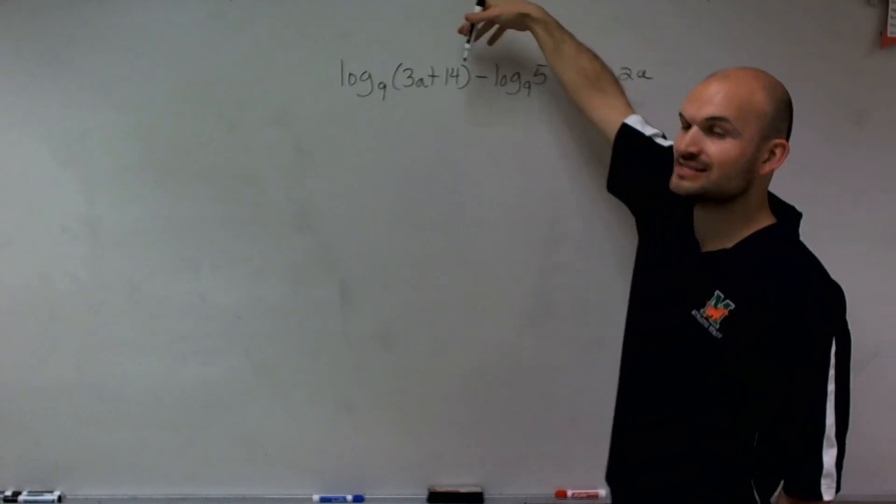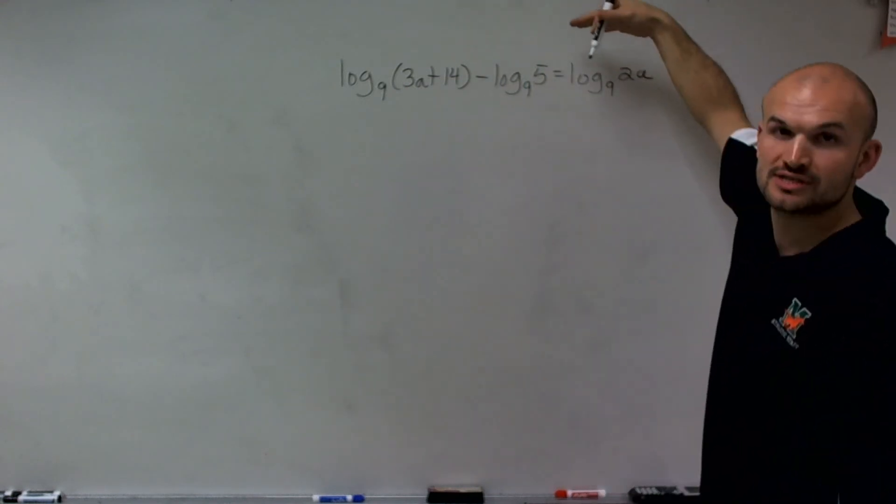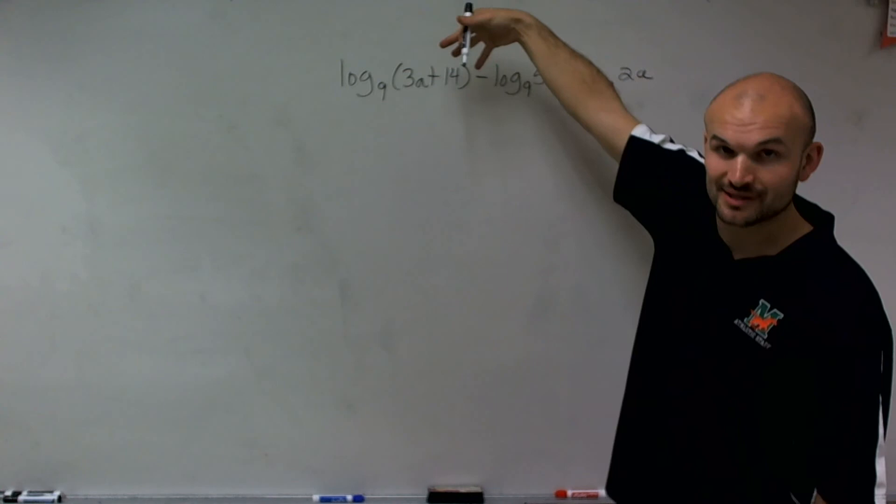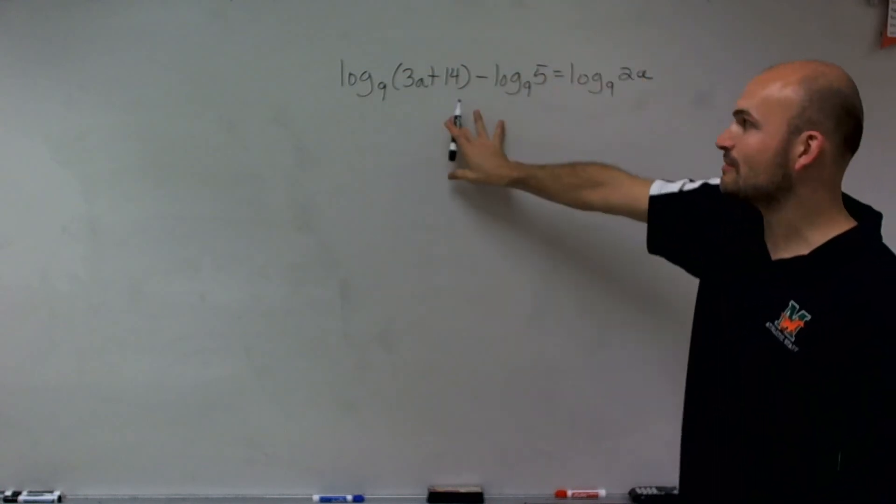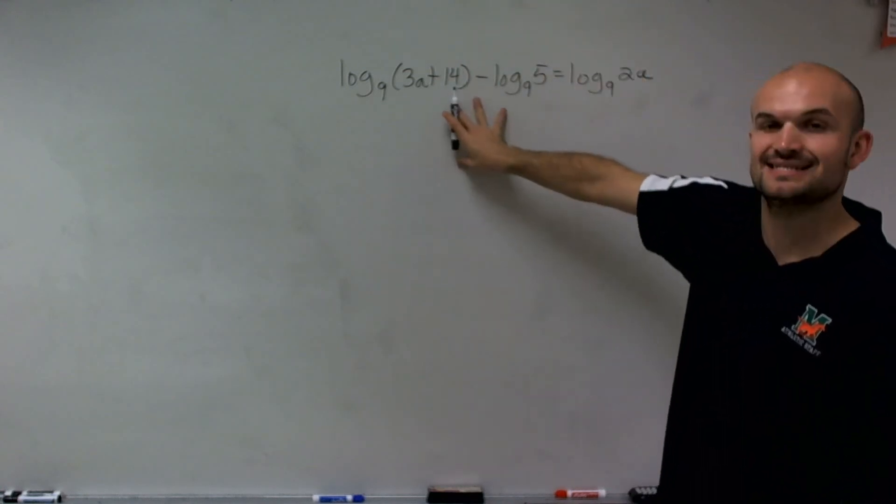But we have a problem here because we don't have a single logarithm equal to another single logarithm. We have two logarithms equal to one single logarithm. So what we want to do is see how can we condense this down to one logarithm.